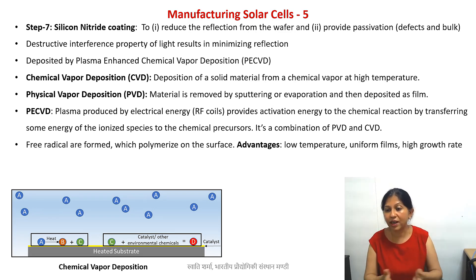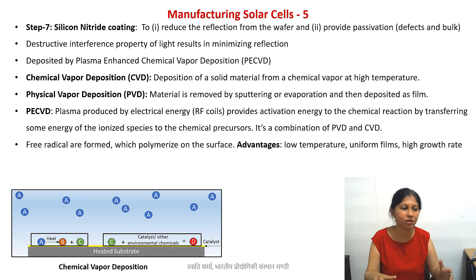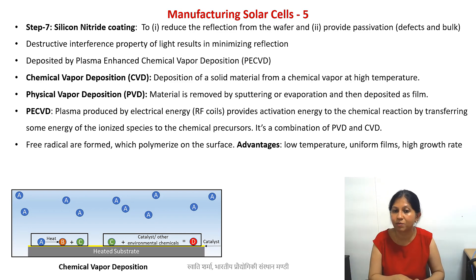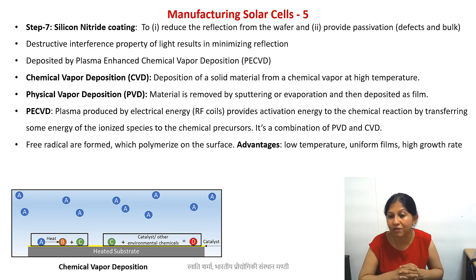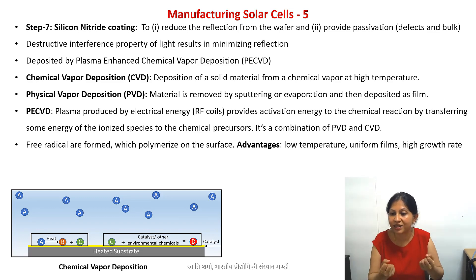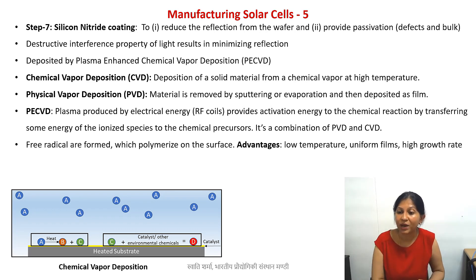In PECVD, free radicals are formed faster and deposited onto the surface where they are polymerized — meaning the radicals combine with each other or form bonds on the substrate. A key advantage of plasma enhanced CVD is that it can be done at lower temperatures. In simple CVD, we need a heated substrate and possibly a catalytic material to provide the activation energy needed for the precursor vapors to crack and undergo the desired reaction.